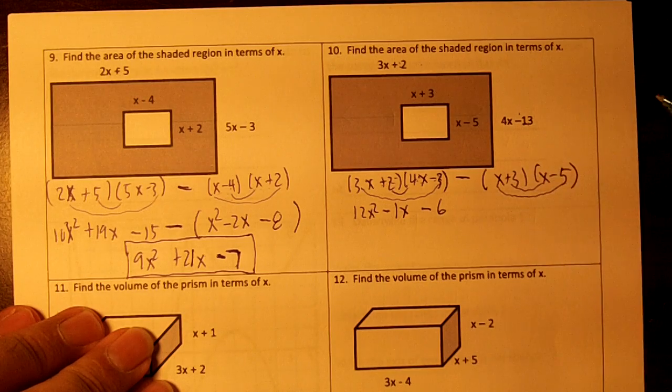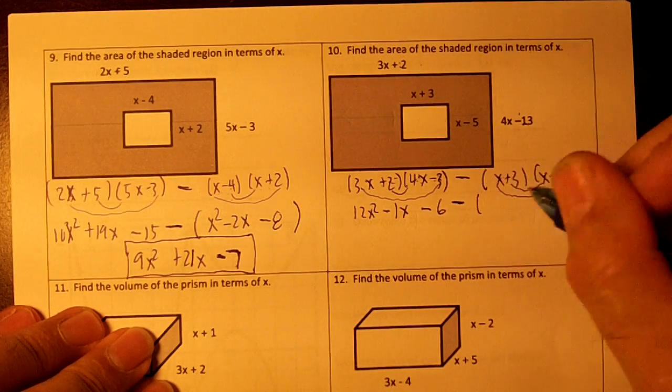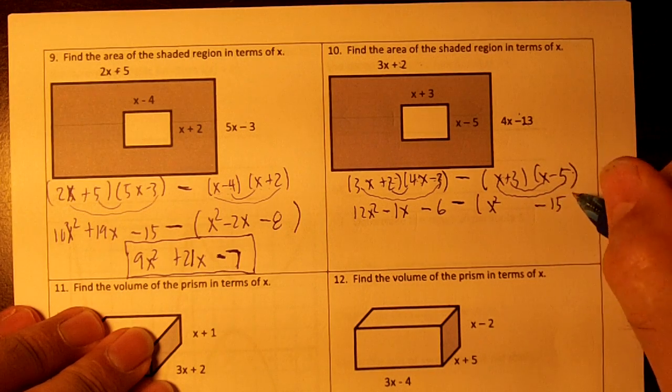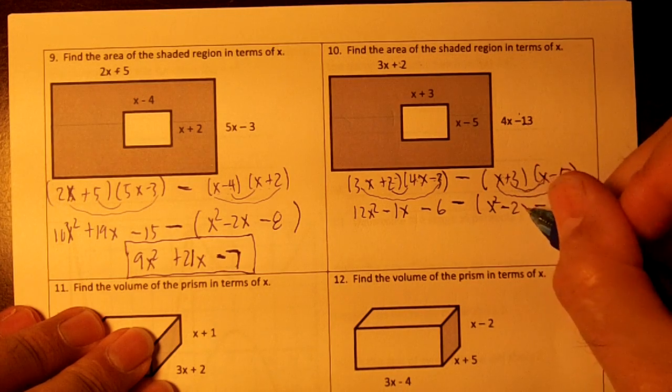Because you're going to need to do it next year. x times x is x squared. And 3 times negative 5 is negative 15. And then we've got a plus 3 and a negative 5. That's going to be minus 2x.